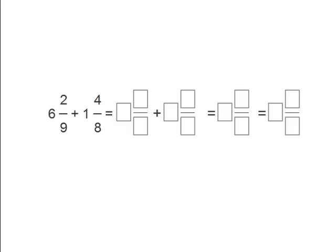Now we have 6 and 2/9 plus 1 and 4/8. We know 6 plus 1 is 7, but we need a common denominator. 8 times 9 and 9 times 8 equals 72.